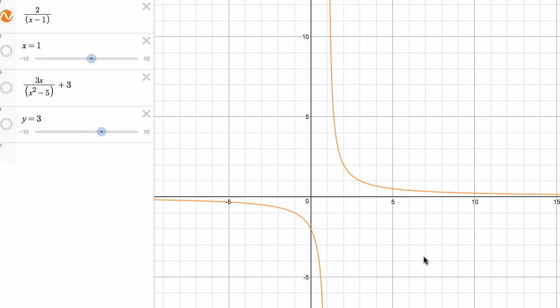So you can immediately see that something interesting happens at x is equal to one. If you were to just substitute x equals one into this expression, you're going to get two over zero.